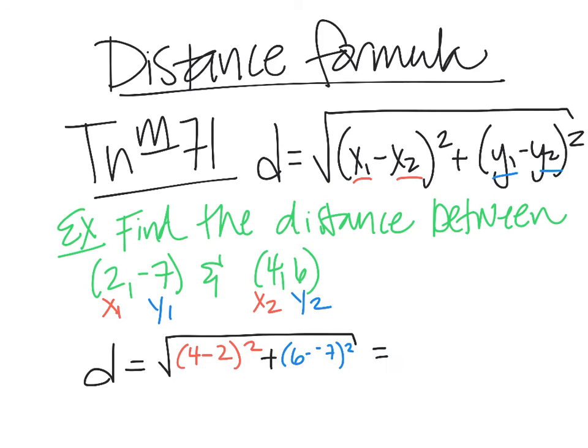Then I just simplify. If I have Desmos, guys, I'm going to stick that in my calculator. Okay, so when I simplify that, I get the square root of 173. So I just stuck in 4 minus 2 quantity squared plus 6 minus negative 7 quantity squared. And I left it under the radical in case somebody wanted me to simplify the radical. If I were to approximate that, it would be 13.15. That's it. Distance formula.